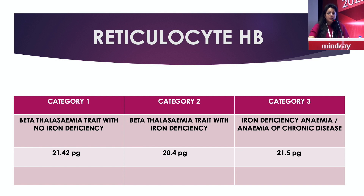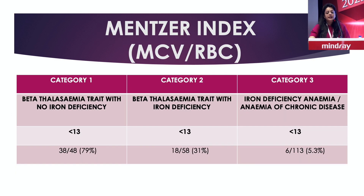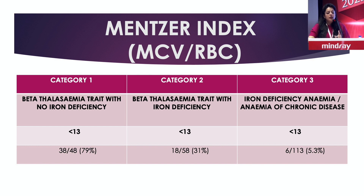We asked whether we could use this parameter to predict thalassemia trait, and compared the Menzer index — MCV divided by RBC — in these three categories. Using a cutoff of 13, we could pick up 79% of thalassemia traits in the first category with no iron deficiency. In the second category with iron deficiency, the Menzer index sensitivity dropped to about 31%. In the third category of iron deficiency, 5% of cases were falsely positive — Menzer index less than 13 but not actually thalassemia trait.